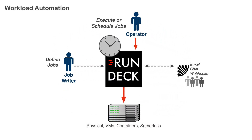Workload automation is another use case. Companies see the value in leveraging a common platform to automate both service-related operations tasks and their legacy business batch processing tasks. Rundeck provides a modern and easier-to-use alternative to enterprise job scheduling tools and works well across both legacy and modern infrastructure. Rundeck's self-service capabilities, both in job definition and job execution, allows for roles and responsibilities to be distributed in new ways that help improve the flow of work across your organization.